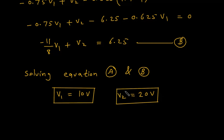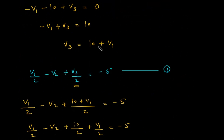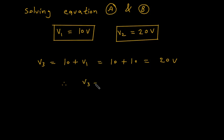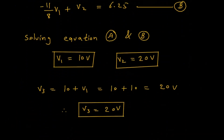Also, V3 = 10 + V1 = 10 + 10 = 20V. Therefore V3 = 20 volt. So the node voltages are: V1 = 10V, V2 = 20V, and V3 = 20V. For electrical and electronics engineering related questions and answers, visit the link in the description below.